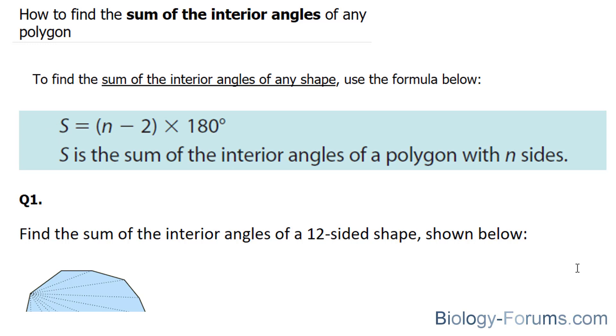S is equal to n minus 2 times 180. And if we express this algebraically, S, which refers to the sum of all the interior angles, is equal to 180 bracket n minus 2, where n represents the number of sides of the polygon.